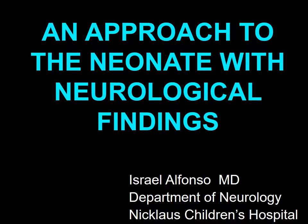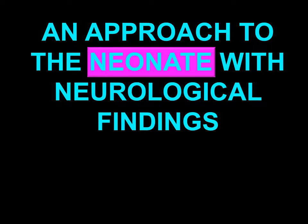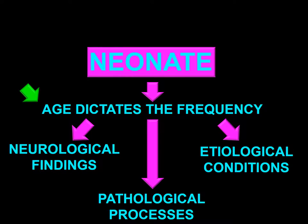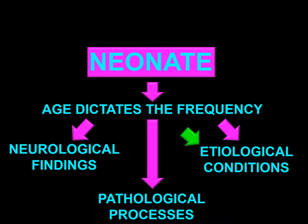The title of this talk is An Approach to the Neonate with Neurological Findings. The keyword in this title is neonate. A neonate, in the context of this talk, is a patient between birth and 30 days of age. The word neonate is important because it implies an age group in which the frequency of the types of neurological findings, pathological processes, and etiological conditions differ from any other age group.